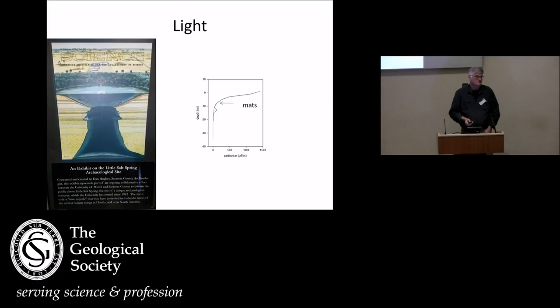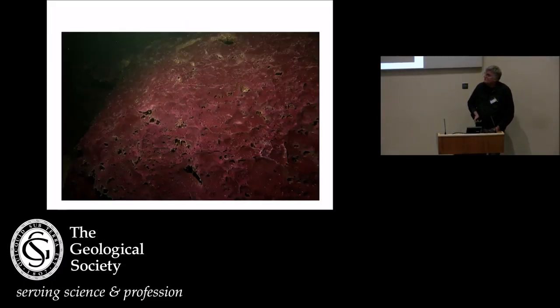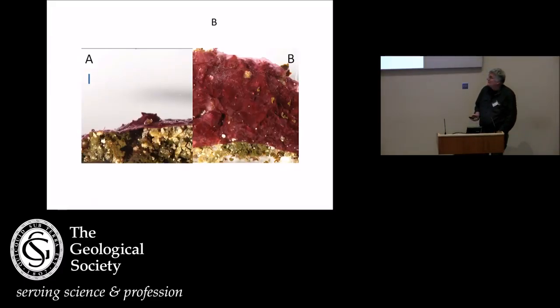There's also light. Light is quickly attenuated and at 10 meters depth, this is where we find the mats, is still 5% or so of the downwelling irradiance at the surface of the lake. It's about 50 micro-Einstein.